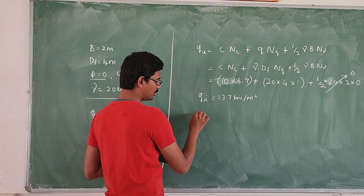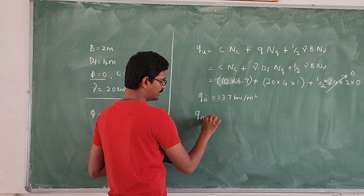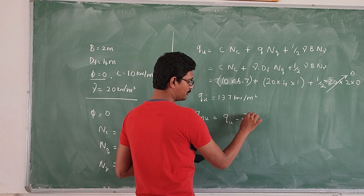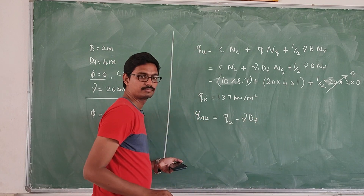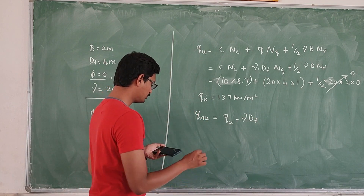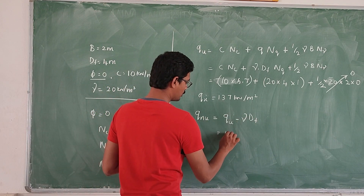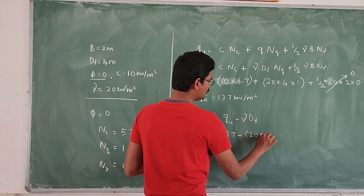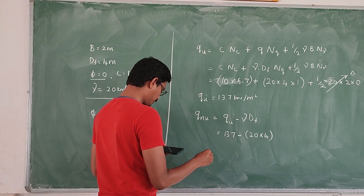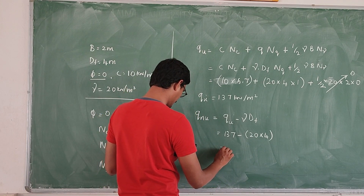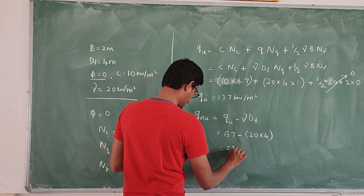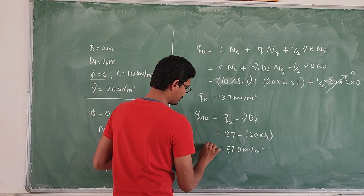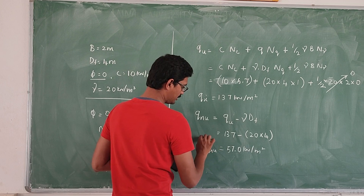Solving this, we get the value of Qu equal to 137 kilonewton per meter square. Now we have to find the net ultimate bearing capacity: Qnu equals Qu minus gamma into Df, which is 137 minus 20 into 4 meter. Solving this, we get 57.0 kilonewton per meter square. This is the net ultimate bearing capacity.